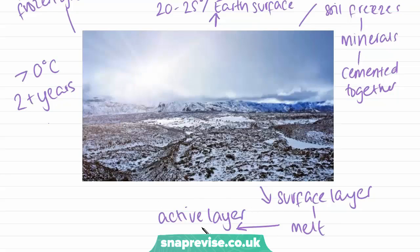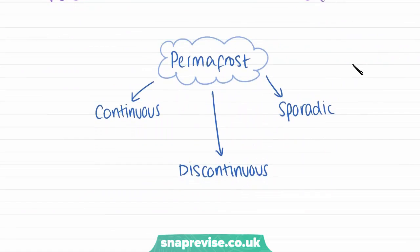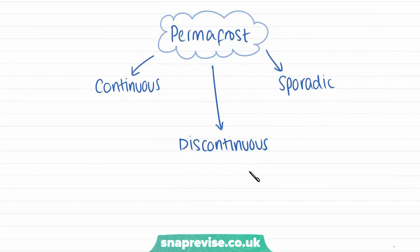The active layer is very important because when it forms, lots of water is released. In this video and the next we're going to look at the landforms caused by this release of water. There are three different categories of permafrost: continuous, discontinuous, and sporadic permafrost.